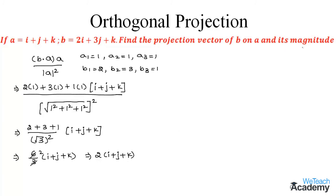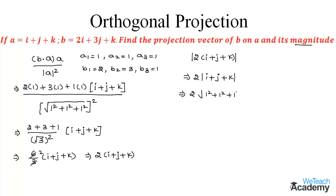Now let us find the magnitude. We apply the modulus to the projection vector 2(i + j + k). Its modulus is |2(i + j + k)| = 2 × |i + j + k| = 2 × √(1² + 1² + 1²) = 2 × √3. So the magnitude of the projection vector of B bar on A bar is 2√3.